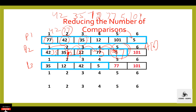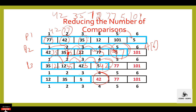In pass 3, compare 35 with 12. 35 is greater than 12, interchange. Then compare 35 with 42. 35 is not greater than 42, condition becomes false, no change. Then compare 42 with 5. 42 is greater than 5, condition becomes true, interchange. Now the third largest element occupies a[n-2]. 42 is at its right position. In pass 4, compare 12 with 35. 12 is not greater than 35, no change. Then compare 35 with 5. 35 is greater than 5, condition is true, interchange.